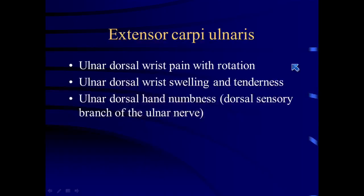The extensor carpi ulnaris tendon is commonly injured and is a cause of wrist pain, particularly with rotation, supination, and pronation. There can be swelling and palpable tenderness right over the extensor carpi ulnaris. In advanced cases, there will actually be numbness because the swelling affects the sensory branch of the ulnar nerve.